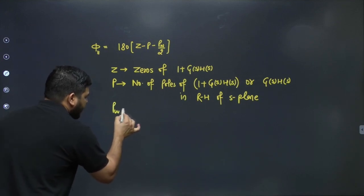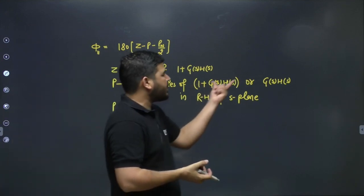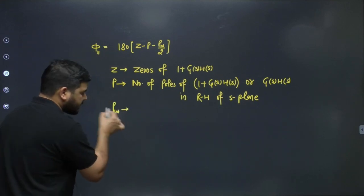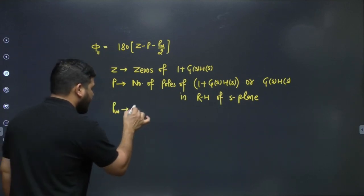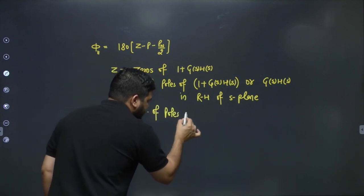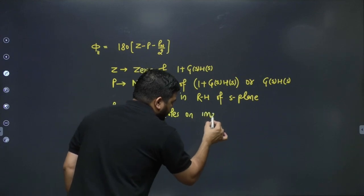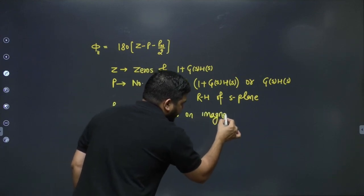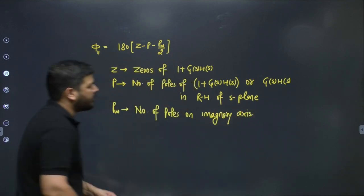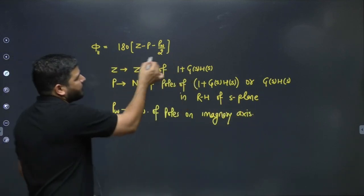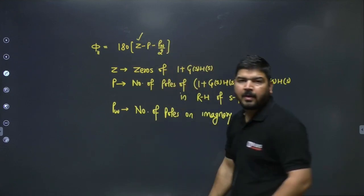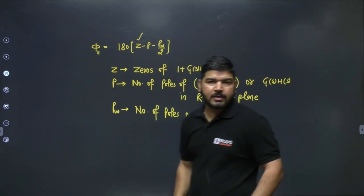PW is the number of poles of (1 + G(s)H(s)) or G(s)H(s) lying on the imaginary axis — the jω or ω-axis. So once you know how to calculate 511, you can solve for Z and then comment on stability.